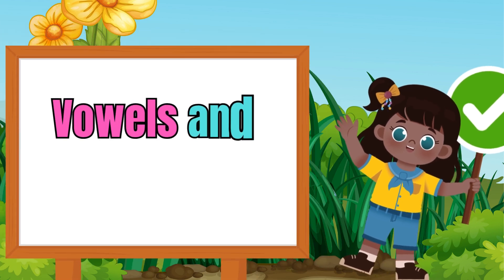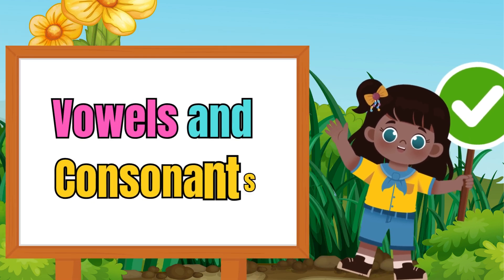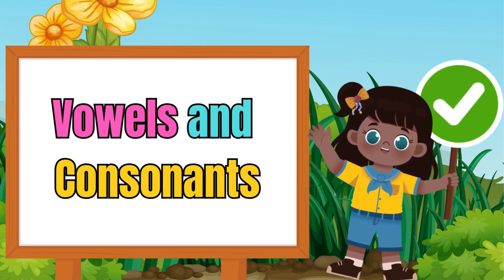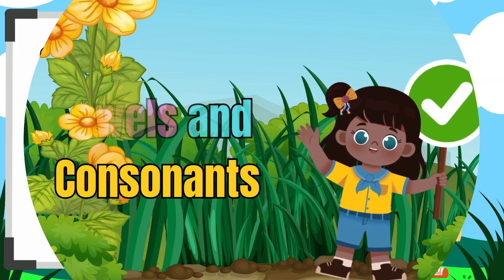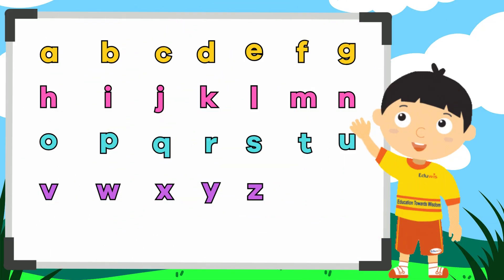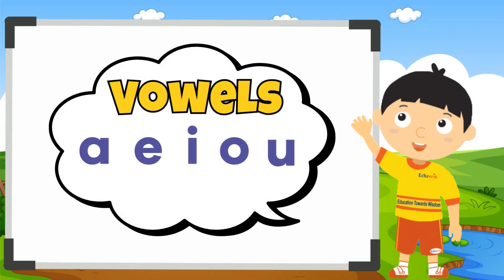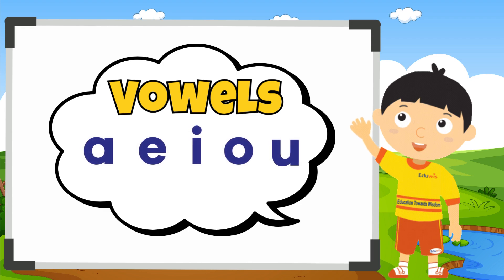Hello kids, today we are going to learn something very important about English vowels and consonants. There are 26 letters in the English alphabet. 21 are consonants and 5 are vowels: A, E, I, O, and U.